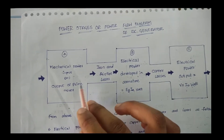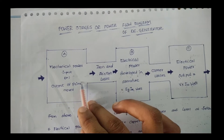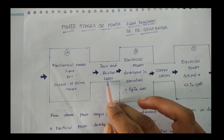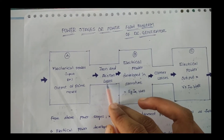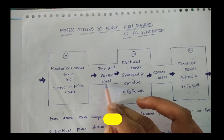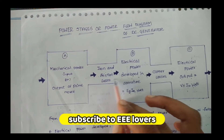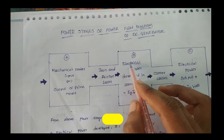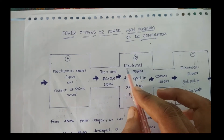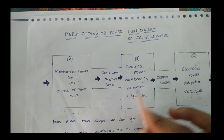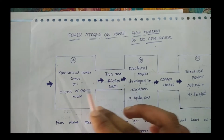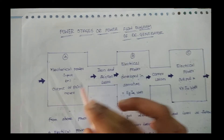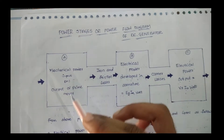From the mechanical input, some iron and friction losses are produced and these losses are accounted for. The second stage involves the electrical power developed in the armature, which is generated from the mechanical power provided by the prime mover.